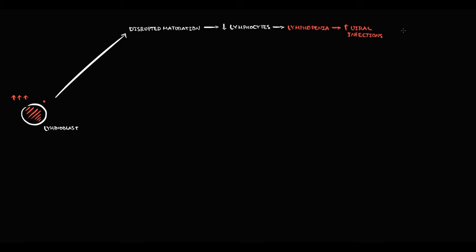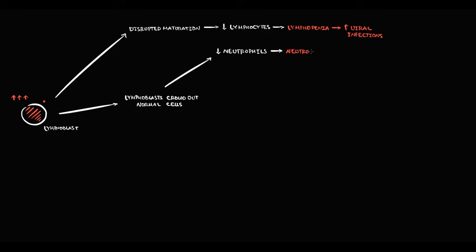To summarize: with the mutation, lymphoblasts invade the bone marrow and crowd out all normal cells. This causes neutropenia, which increases the risk of bacterial infections. Together, lymphopenia and neutropenia increase the risk of fungal infections.